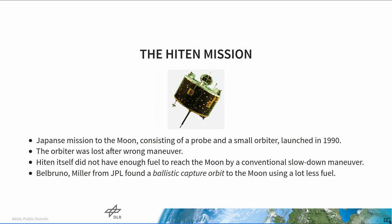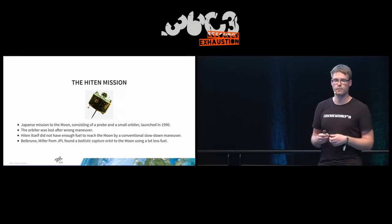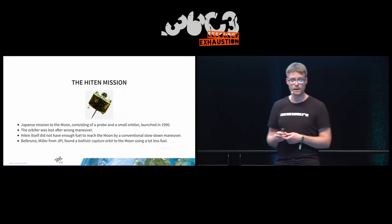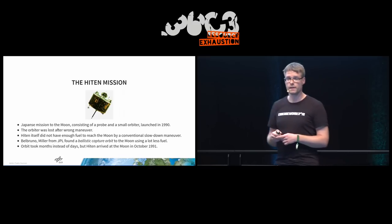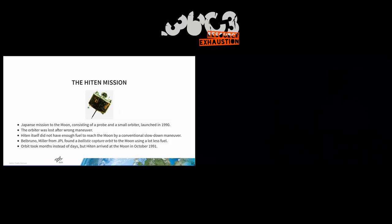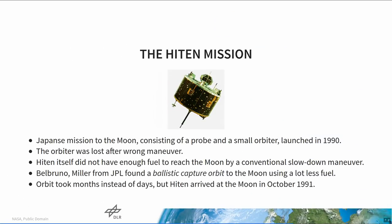However, there were two people from JPL, NASA — Belbruno and Miller — who actually heard about this and were working on strange orbits: ballistic capture orbits. They actually found one for the Hiten probe, sent it to the Japanese, and they actually used that orbit to get the Hiten probe to the Moon. It arrived in October 1991 and could do some science. However, the transfer took quite a bit longer — a normal Moon transfer takes about three days, but this one actually took a few months.